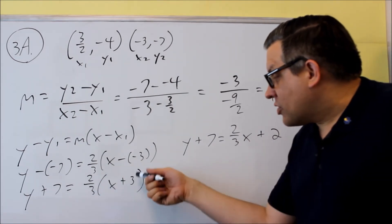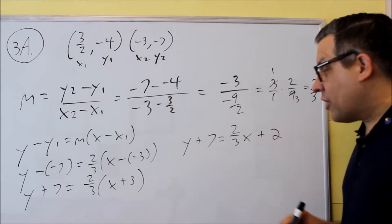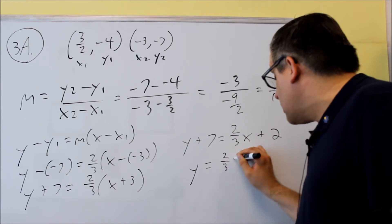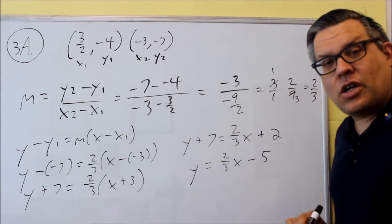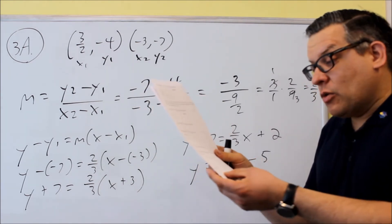Because 2 thirds times 3, the 3's will cancel out and you get a 2 left there. And then finally we're just going to subtract 7 from both sides and we get y is equal to 2 thirds x minus 5. So that's going to be the equation. That's what you put at the bottom blank down there where it says equation.